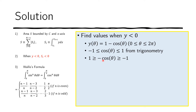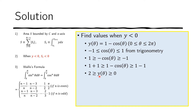We then add 1 on all sides, giving us 0 ≤ 1 − cosθ ≤ 2. We can replace 1 − cosθ with y(θ), so we get 0 ≤ y(θ) ≤ 2. This tells us that y(θ) never falls below 0 — it's always non-negative, and in fact always at most 2. Because of this, we do not have to break the integral into separate pieces. Everything falls above the x-axis, so we just need to find the limits.